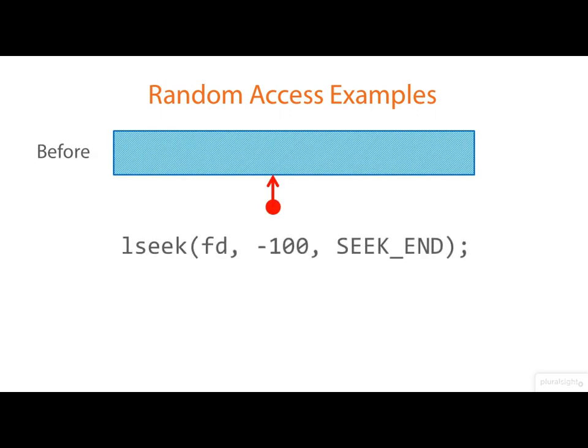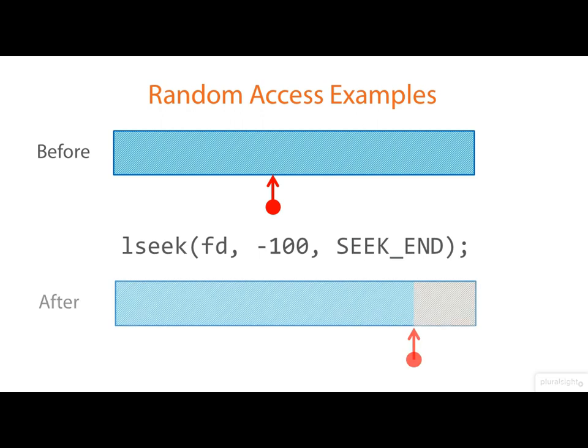In this example, we're seeking 100 bytes before the end of the file. Notice the offset here is negative, so the file position pointer ends up 100 bytes before the end of the file.